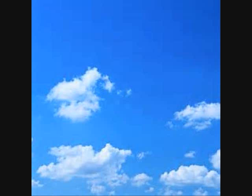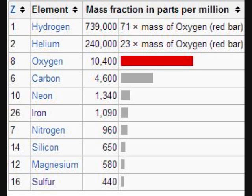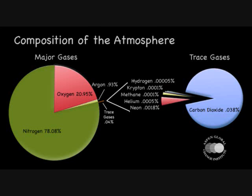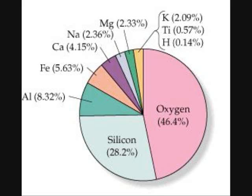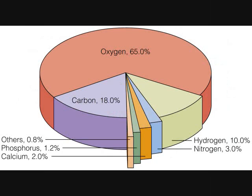Furthermore, oxygen is very, very common. In the universe, it is the third most abundant element. In the atmosphere, it is the second most abundant gas. It's the most abundant element in Earth's crust, and by far the most abundant in the human body.